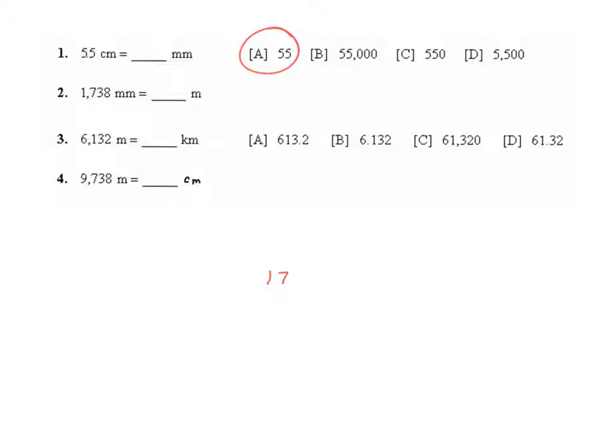I need to take these 1,738 millimeters and divide them by 1,000. When we divide by powers of 10, we are shifting our digits to the right, which makes it look like our decimal is shifting to the left. And because I'm dividing by 1,000, that's three powers of 10. One, two, three. So I have 1.738 meters.